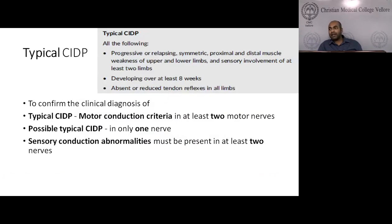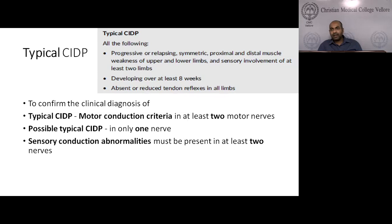For typical CIDP: clinical criteria (progressive/relapsing, symmetric, proximal and distal muscle weakness of upper and lower limbs, sensory involvement of at least two limbs over at least eight weeks, absent or reduced tendon reflexes) plus motor conduction criteria in at least two motor nerves confirms CIDP. If abnormality is present in only one nerve, the classification is possible typical CIDP. Sensory conduction abnormalities should also be present in two nerves for both typical and possible typical CIDP. For distal CIDP, motor conduction criteria must be fulfilled in two upper limb nerves; if fulfilled in two lower limb nerves only or one upper limb nerve, it is possible distal CIDP.